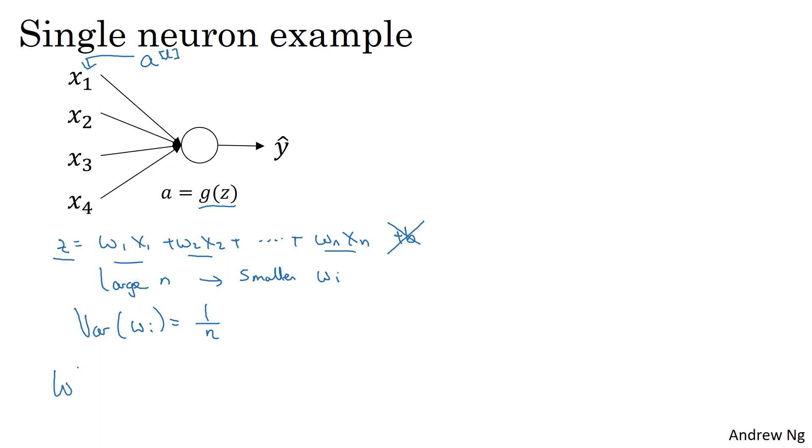So in practice, what you can do is set the weight matrix w for a certain layer to be np.random.randn, and then whatever the shape of the matrix is, and then times square root of 1 over the number of features that are fed into each neuron in layer l. So it's going to be n of l minus 1, because that's the number of units that are feeding into each of the units in layer l.